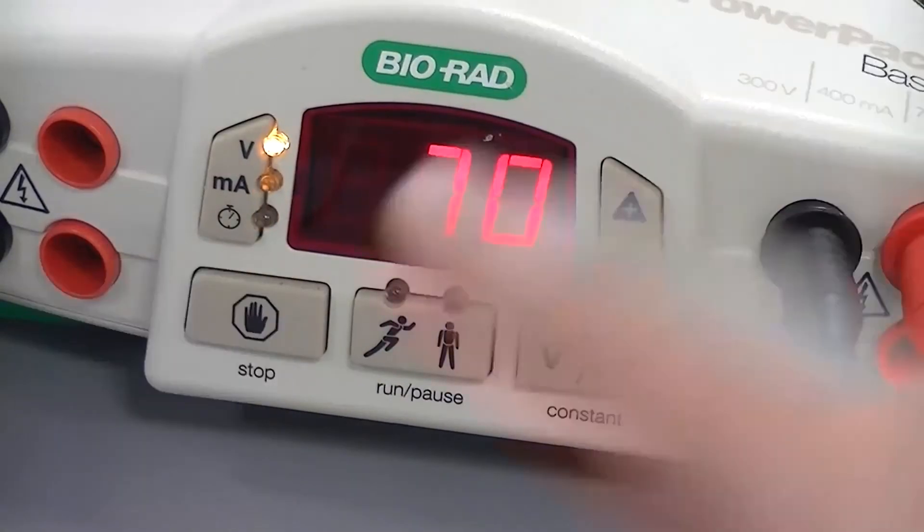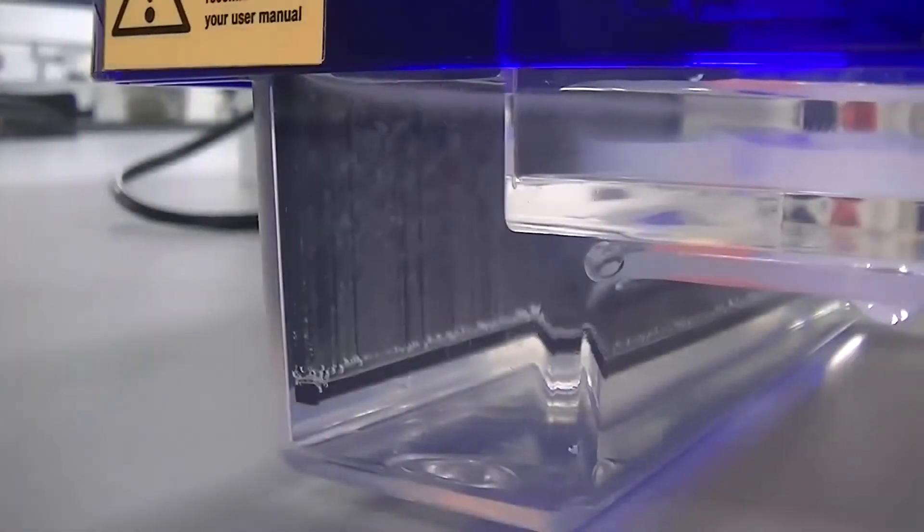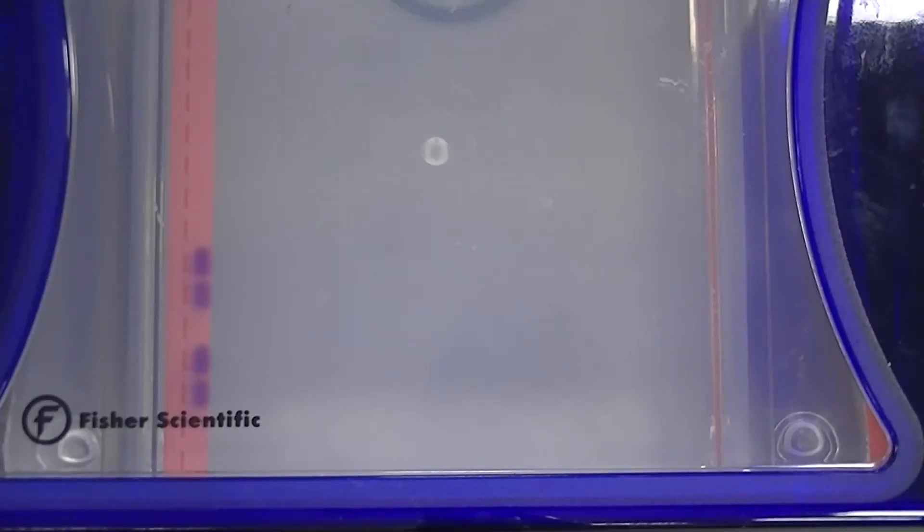Electrolysis is taking place when bubbles are forming. The agarose gel is like a matrix. DNA gets pulled through it by an electrical current. Smaller DNA fragments can travel further and faster through the gel compared to the larger DNA fragments.